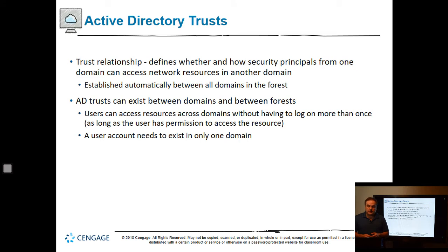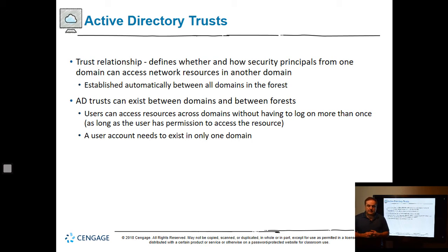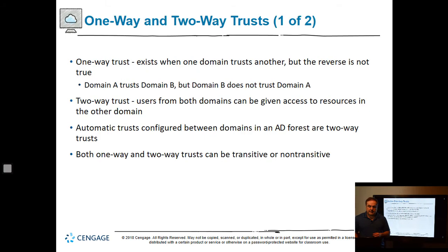Trust relationships define whether and how security principles from one domain can access resources on another domain, or from one forest to another. Trusts are established automatically between all domains in the forest. Users can access resources across the domain without having to log in more than once — but you have to set that up correctly, otherwise every time you try to log in to the other domain or forest, you'll end up getting prompted or denied.